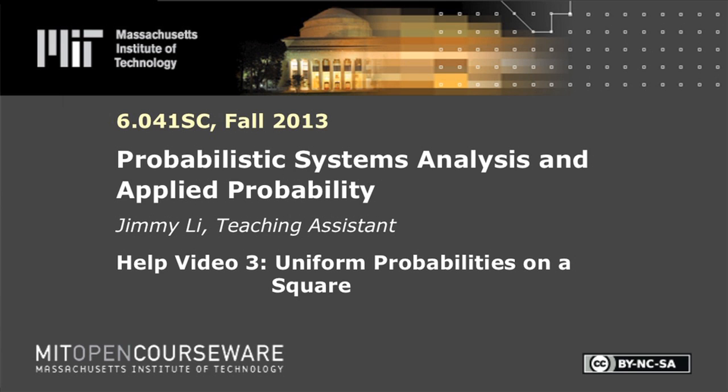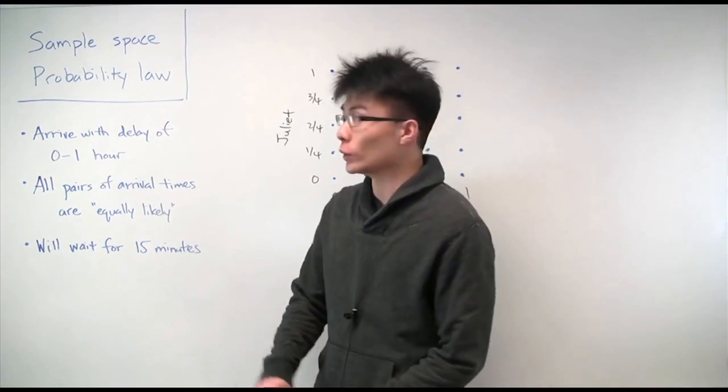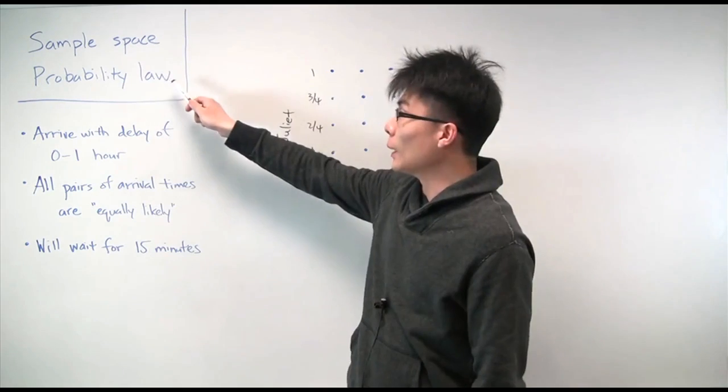In this problem, we'll be helping Romeo and Juliet meet up for a date, and in the process, we'll review some concepts in basic probability theory, including sample spaces and probability laws.